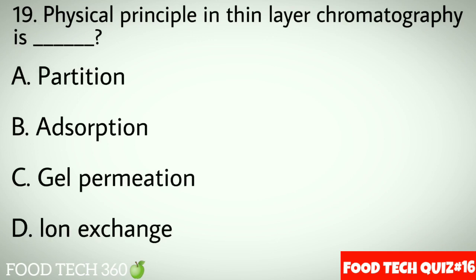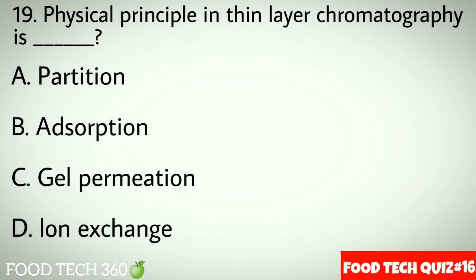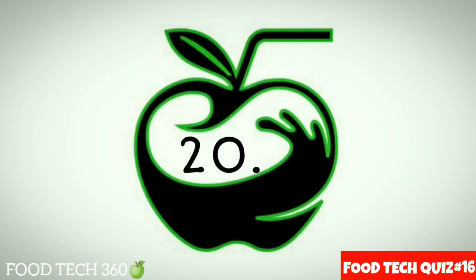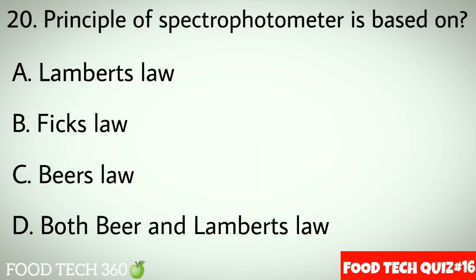Question No.19: Physical principle in thin layer chromatography is dash. Options A: Partition. B: Absorption. C: Gel permeation. D: Ion exchange. Correct answer A: Partition.